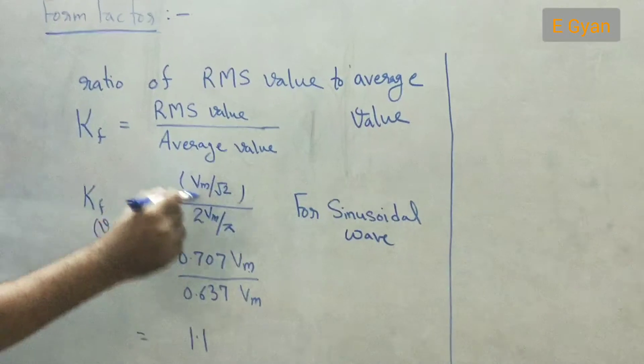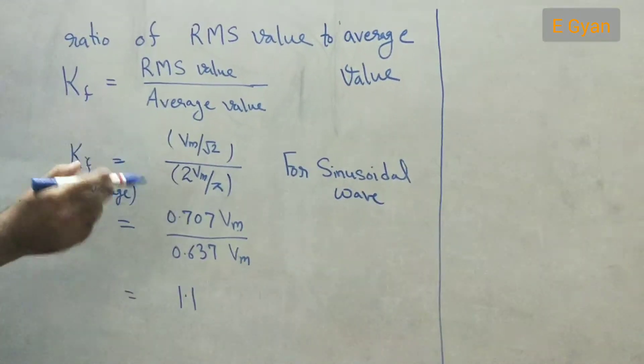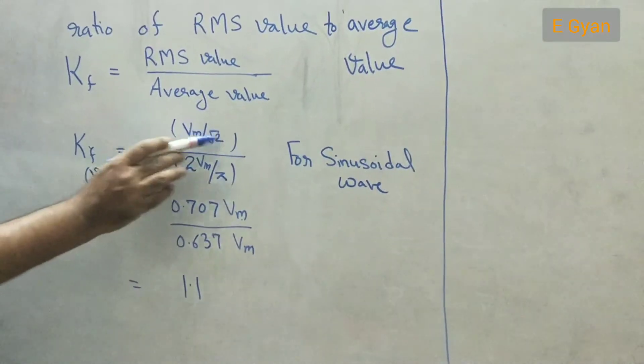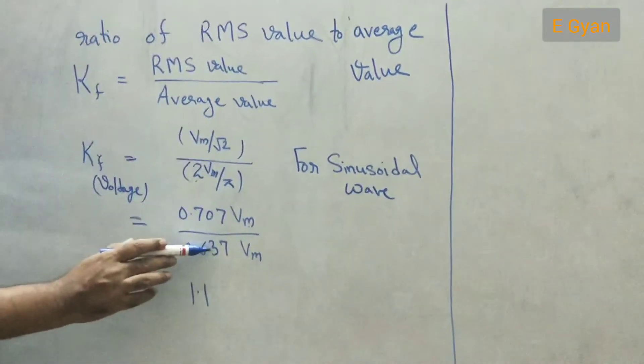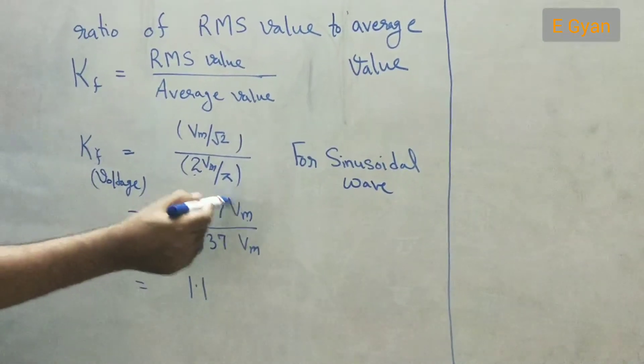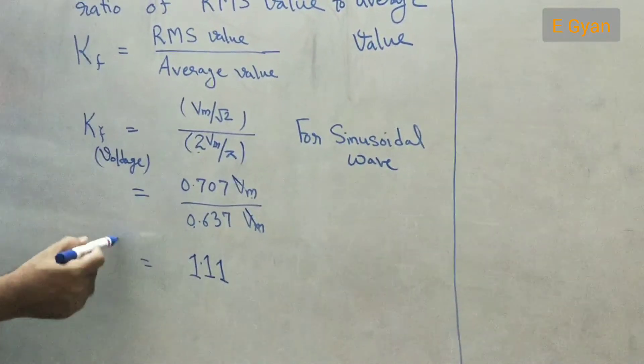So this will be the formula of form factor. And we can write Vm upon root 2 as this and 2Vm by pi as 0.637 into Vm. Vm, Vm will get cancelled and the answer will become 1.11.